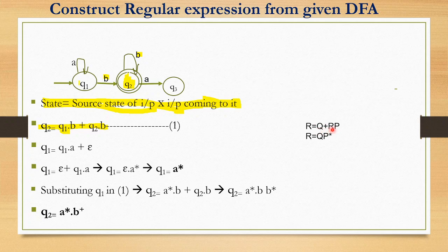Now applying Arden's theorem: we have R equals Q plus RP. For Q2 equals Q1·B plus Q2·B, this matches the form where R is Q2, Q is Q1·B, and P is B. Applying the theorem gives Q2 equals Q1·B into B star.